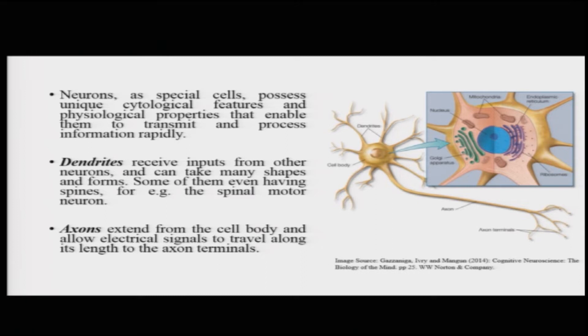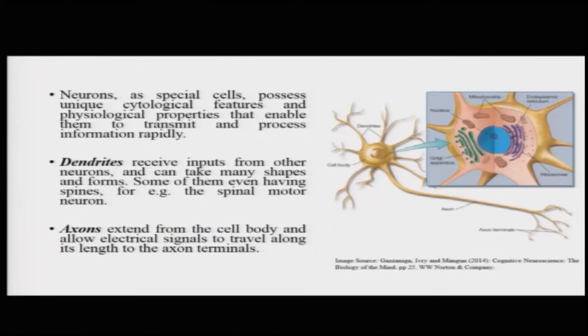The dendrites, these projections on top of the cell body, are basically responsible for receiving inputs from other neurons. Because they have to receive these inputs they can take any kind of shape — if you search Google for different kinds of shapes that dendrites take, you will be amazed. Similarly, the axon is a long fiber whose responsibility is to allow the electrical signals generated or received from other neurons to travel along the cell body and then transmit them to other neurons.